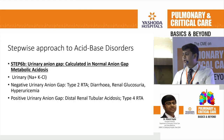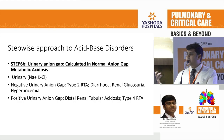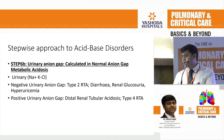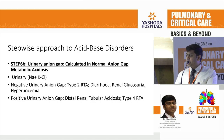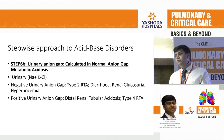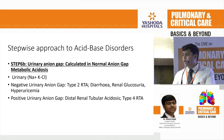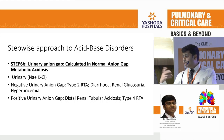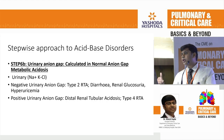When you have a normal anion gap metabolic acidosis, you always calculate the urinary anion gap: urine sodium plus potassium minus chloride. A positive urine anion gap indicates distal renal tubular disorders — type 1 and type 4 RTA. A negative urine anion gap tells you about type 2 RTA, diarrhea, renal glucosuria, or hyperuricemia. So if a patient does not give a history of diabetes but you are getting a normal anion gap with a negative urinary anion gap, you can go back and ask the patient about diabetes.